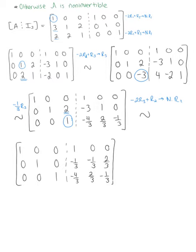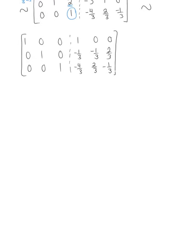We have row equivalence and have produced the identity matrix on the left side of the augmented matrix. The right-hand side is now our inverse of A. Therefore, A inverse equals the matrix: 1, 0, 0; −1/3, −1/3, 2/3; −4/3, 2/3, −1/3.